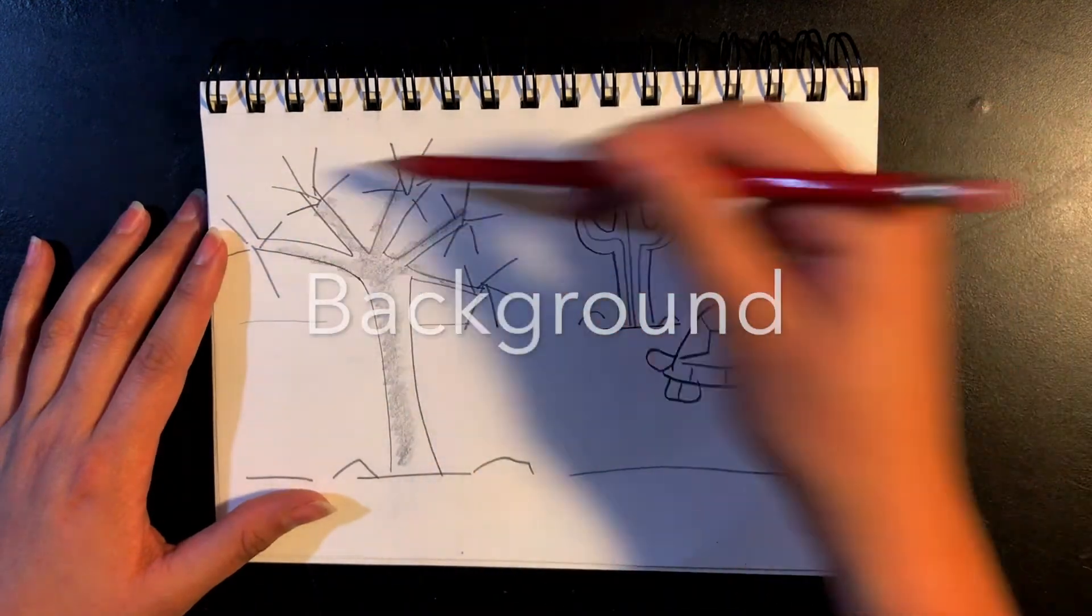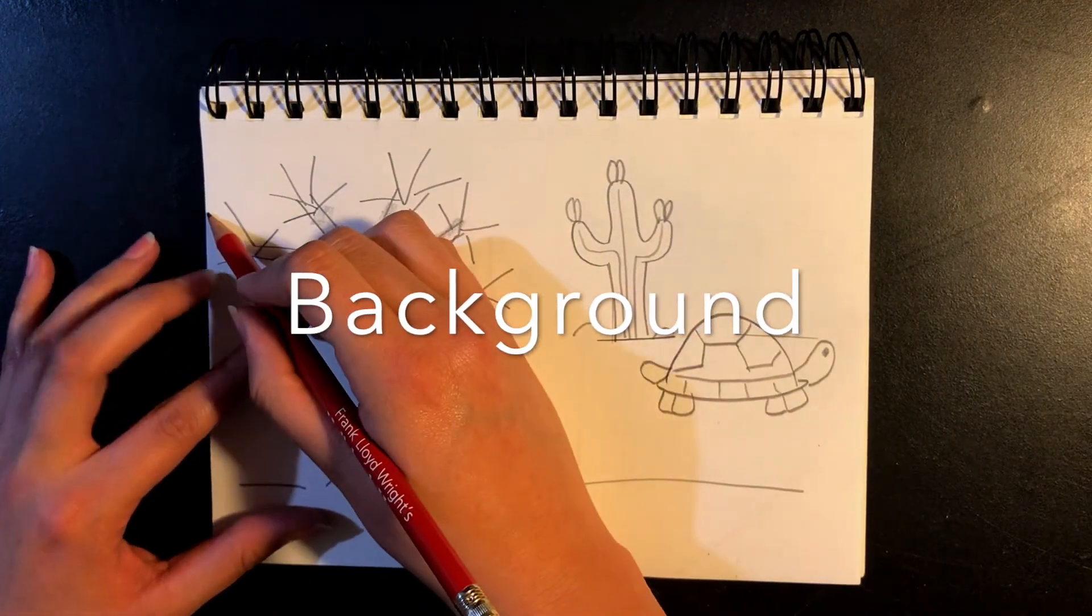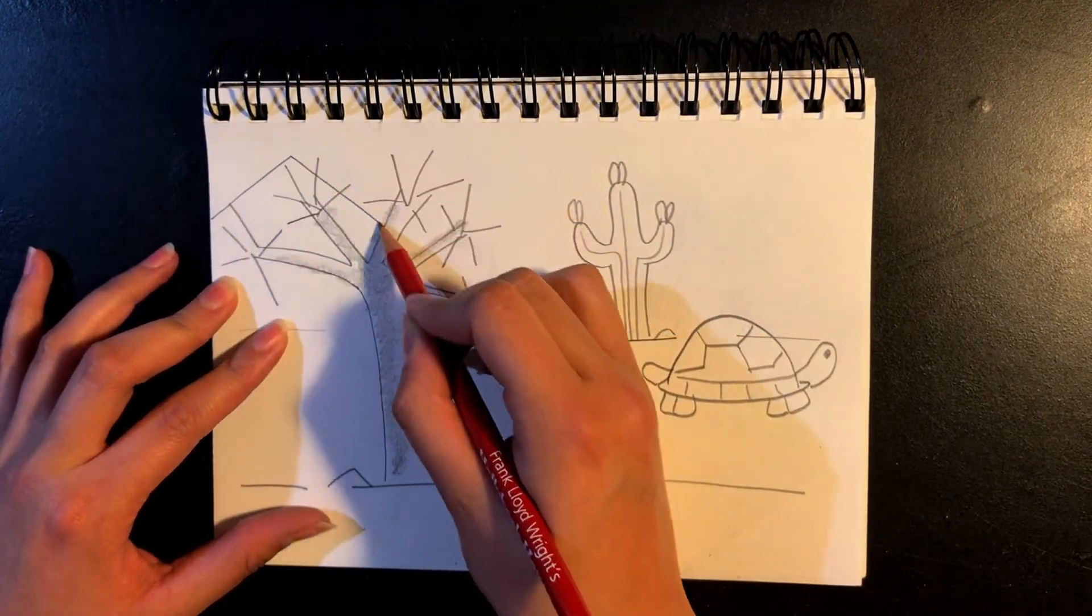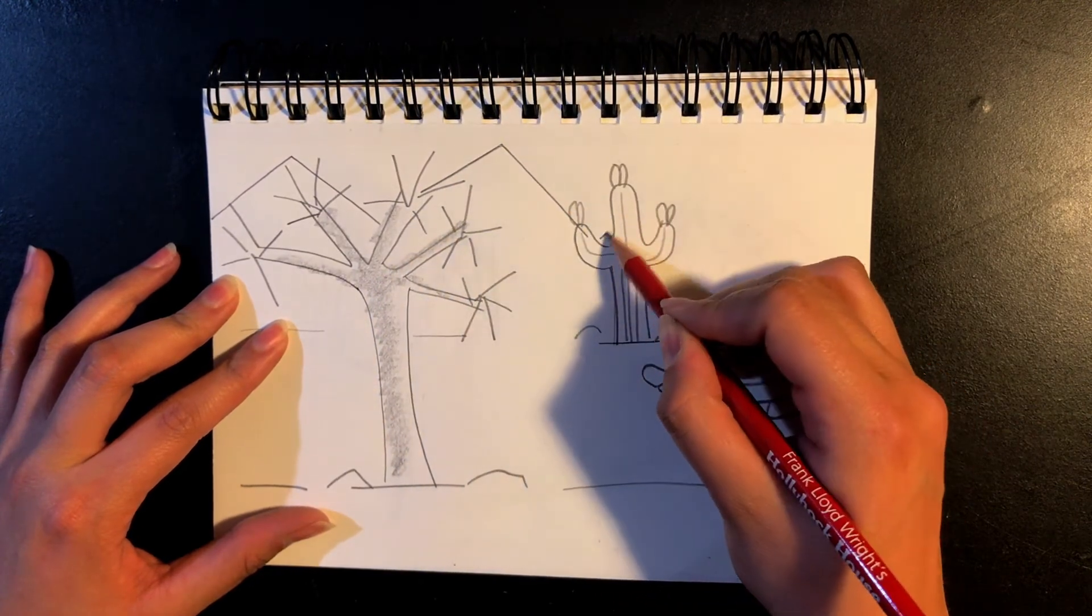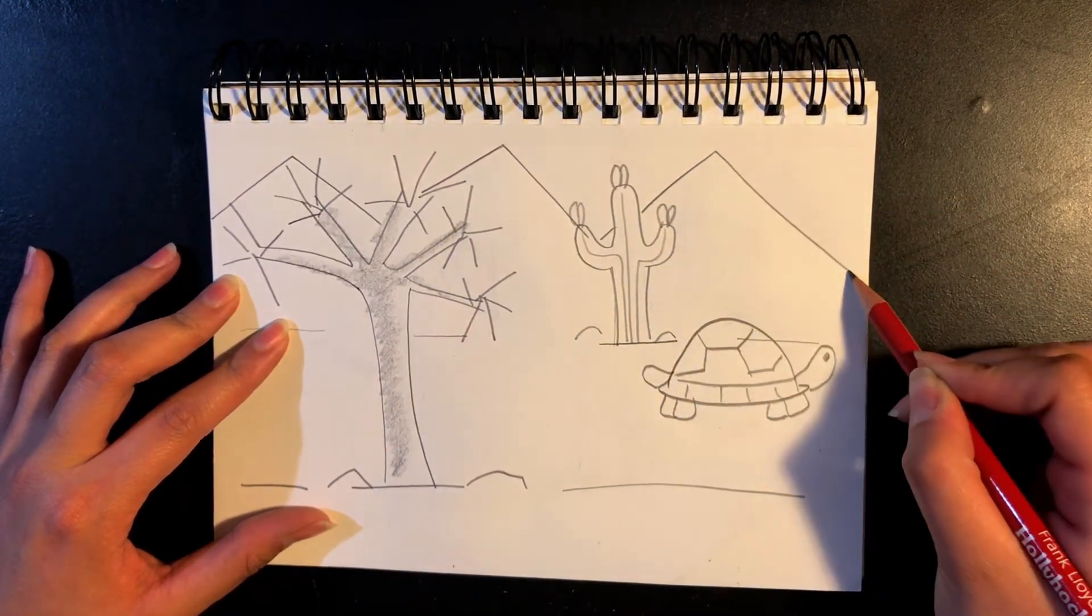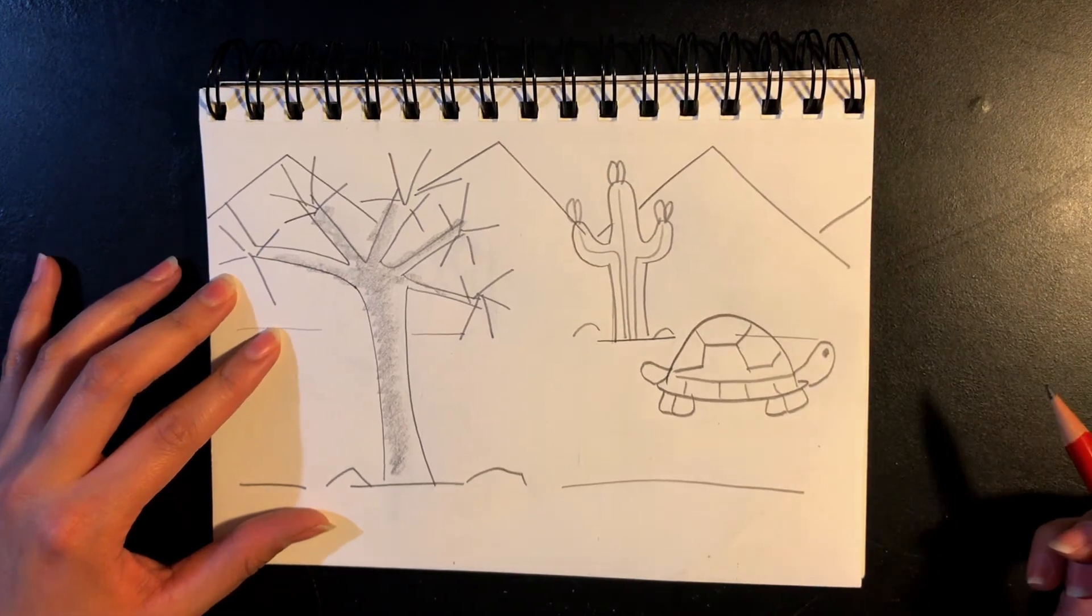And our last part, our background. We're going to keep our background simple. I'm just going to add some mountains, and then you can also see the sky, and that'll be my background.